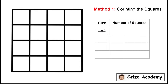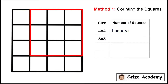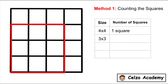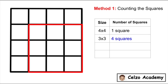Let's begin with the 4x4 grid. How many 4x4 grids can we form? There's only one. Now let's count how many 3x3 squares. How many 3x3 squares do you think we can have? 1, 2, 3, and 4. There are 4 squares that are 3x3 in size.